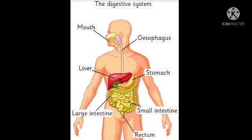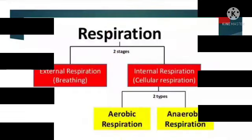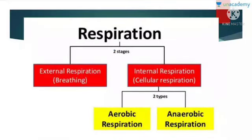The digested food is absorbed by the blood and transported to all cells in the body. Then the undigested food passes into the large intestine, where water is absorbed and the waste material is removed.